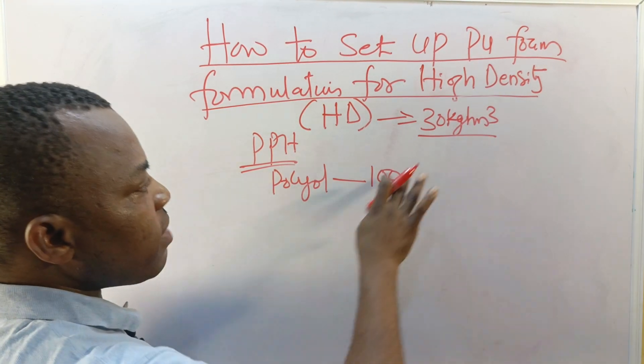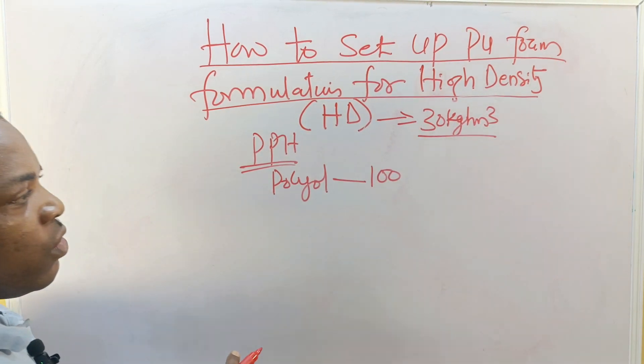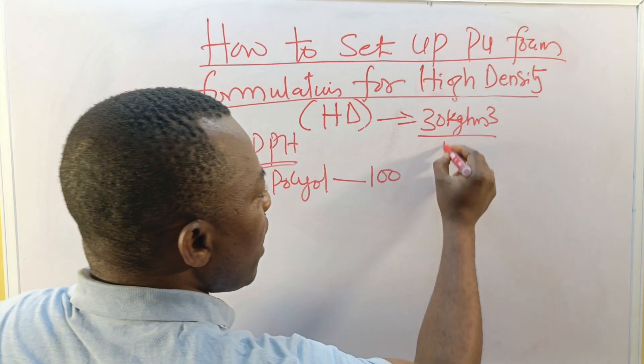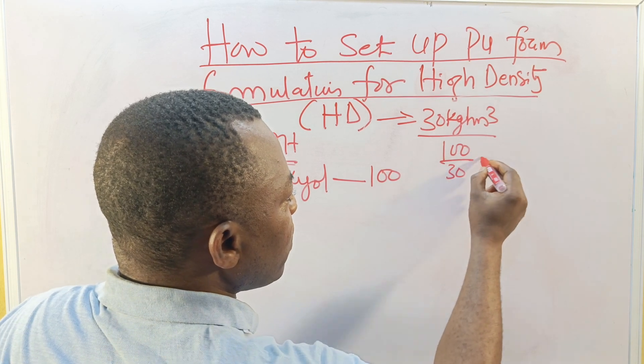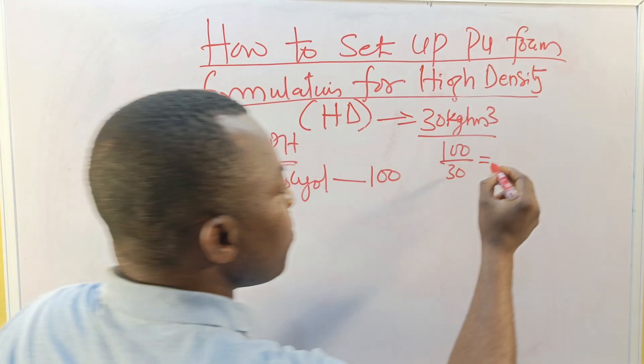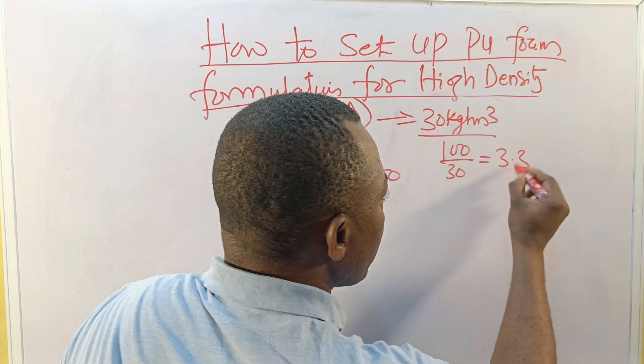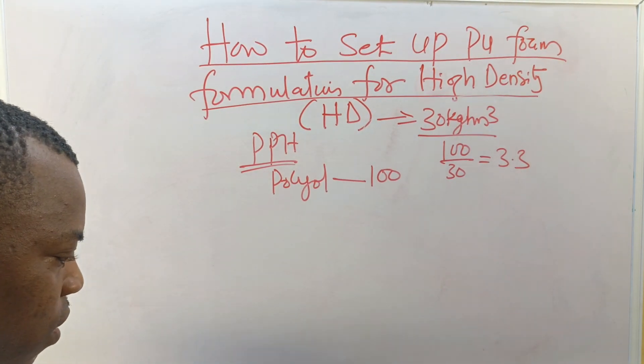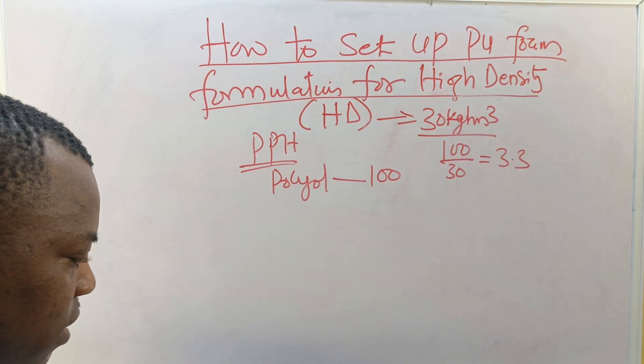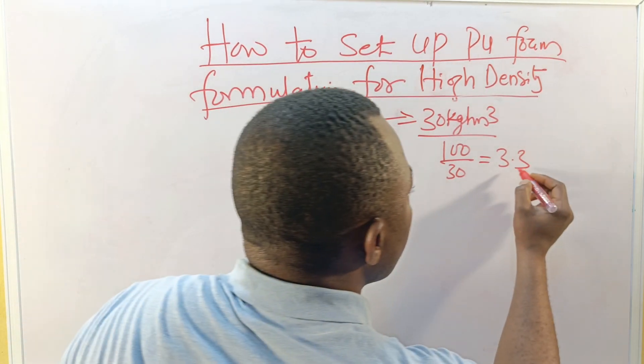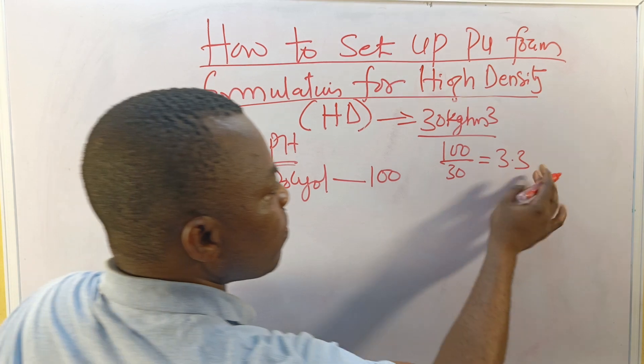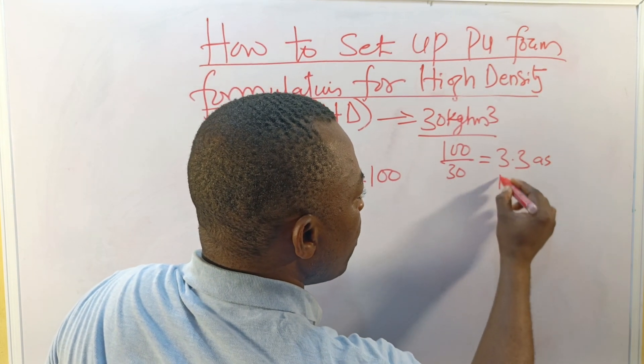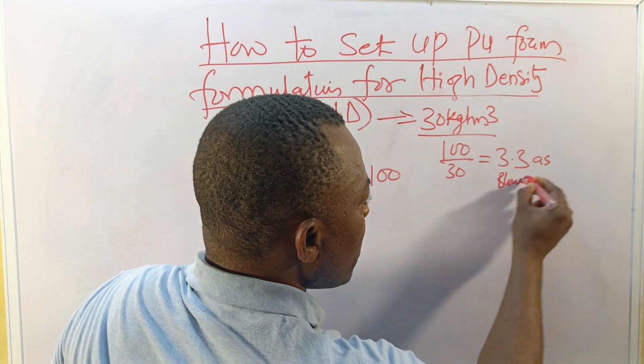I'm looking for 30, so what I need to do is take 100 divided by 30 of the density. This should give me 3.3. Let me confirm, 100 divided by 30 gives me 3.3 as blowing agent.